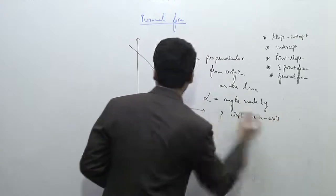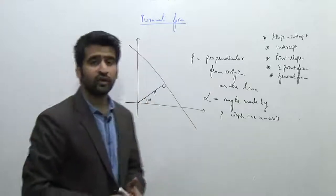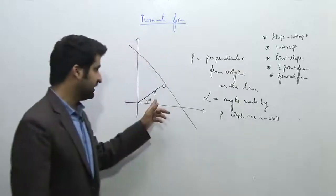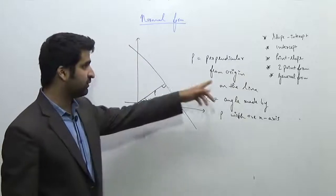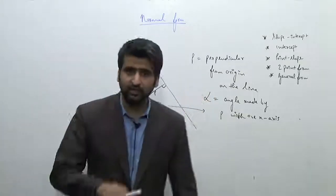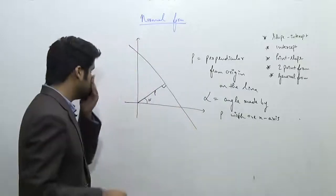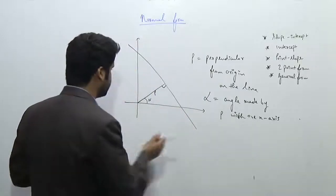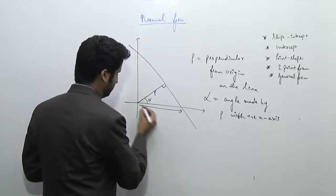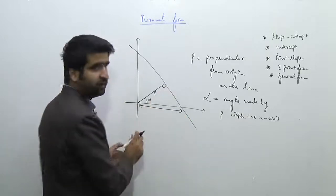We know the value of alpha as well. Then we'll try to find out the equation of the straight line. I know these two parameters: first, the perpendicular from the origin on the line, and second, the angle made by p with the positive x-axis. Now, to find the equation of the straight line, we'll first calculate by applying trigonometry in this case.